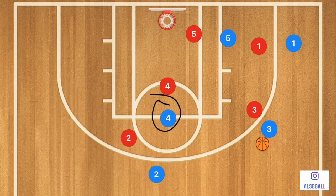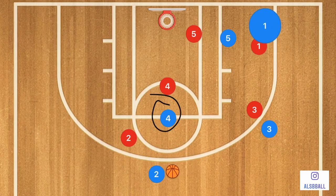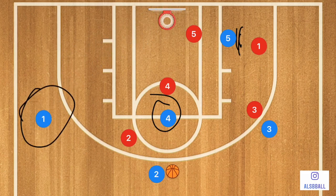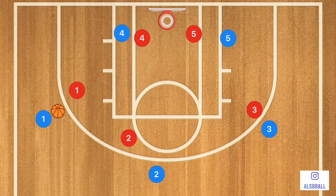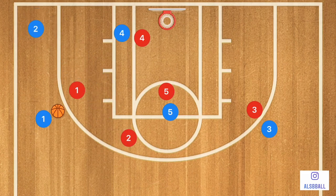Player two is going to fill player one's spot so that we can reverse the ball. To reverse the ball, player three passes to player two. Player one is running the baseline and player five is screening for him, popping out to the side. Player two then passes the ball to player one. Player four goes down to the post, player five goes up towards the free throw line, and player two goes down into that low corner.